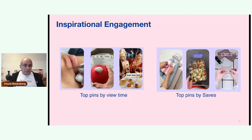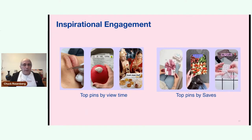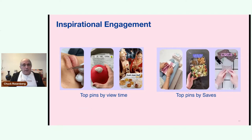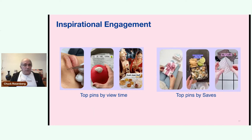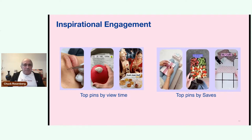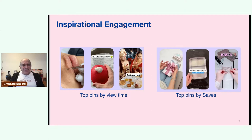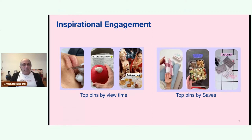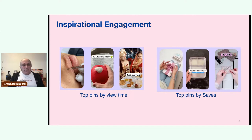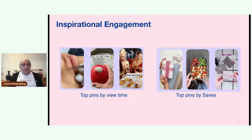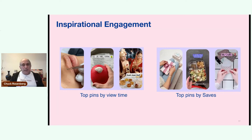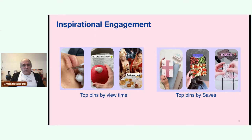Looking at the types of engagement from saves or pinning: on the left are videos optimized for view time — not that inspirational, but they might engage people for a short time. The top pins by number of saves, on the right, are really things that users are saving for later, things they would like to come back to and take action on. You could imagine those are things they found inspirational. And that's a great signal for a machine learning system.